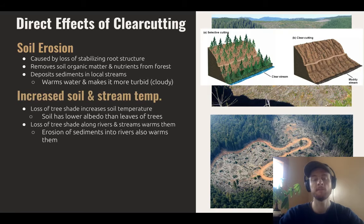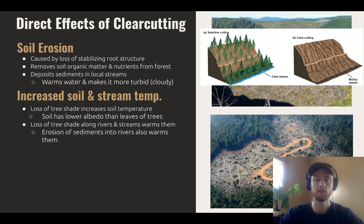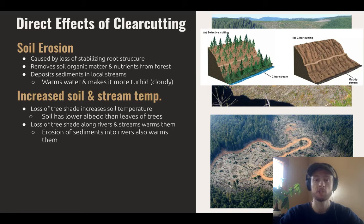Another important impact is that clear cutting leads to increased soil and water temperatures. When we lose the shade offered by the leaves of the trees, more sunlight hits the soil, and the soil has a lower albedo, meaning it absorbs more sunlight than the leaves did, which increases the soil temperature. The loss of shade on the river also warms the river, and the river's now muddier, darker color causes it to absorb even more heat. This is a problem for microorganisms that live in the soil — direct sunlight can kill them, and it also dries out the soil, making it even more prone to erosion.